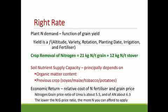Following potatoes you generally have a very fertile soil, and after tobacco you have very low organic matter but reasonably fertile conditions. But because wheat is so demanding of nitrogen, another important consideration is the cost of nitrogen fertilizer relative to the grain price. The nitrogen-to-grain price ratio of urea is about 5.5 (assuming a grain price of $550 per tonne), and for ammonium nitrate it's about 6.3. The lower this ratio, the more nitrogen you can afford to apply. So with urea you can apply more nitrogen than with ammonium nitrate from an economic perspective — applying one kilogram of nitrogen using urea requires 5.5 kilograms of grain to cover that cost.